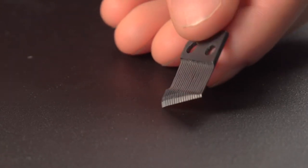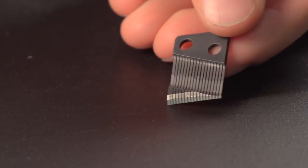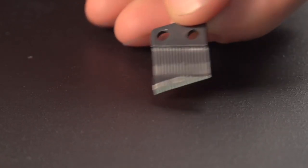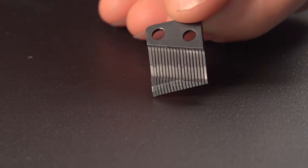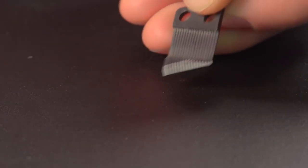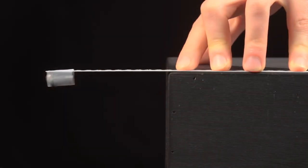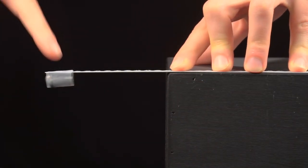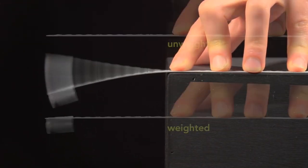Notice when you turn the comb over, the teeth don't have the same thickness. The longer teeth, the lower notes, are weighted more on the ends. This added weight lowers their resonant frequency even farther. Here, I taped a lead weight to the end of the saw blade, and it produces a lower note than without the weight.